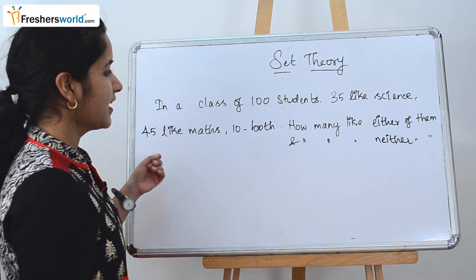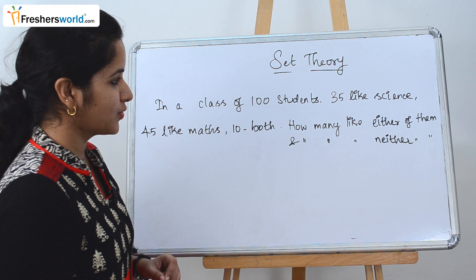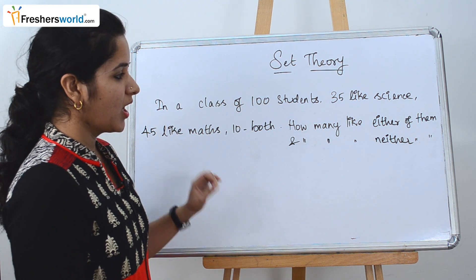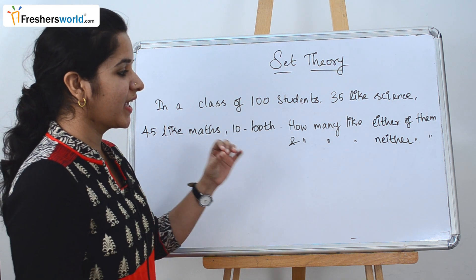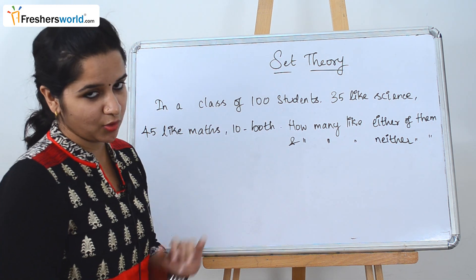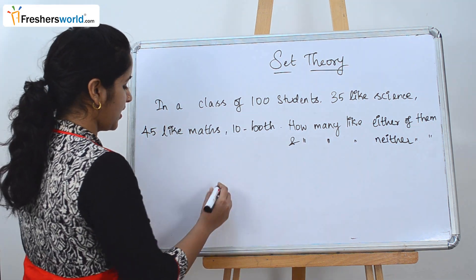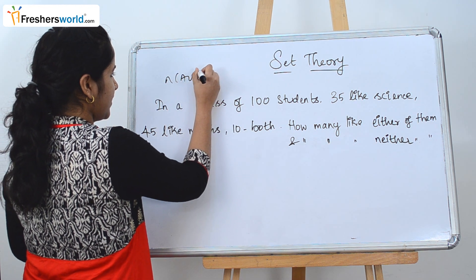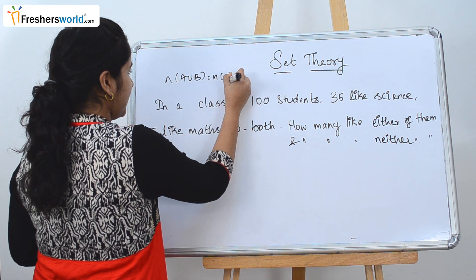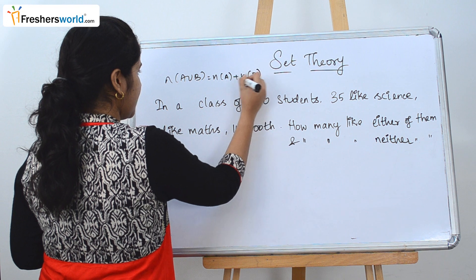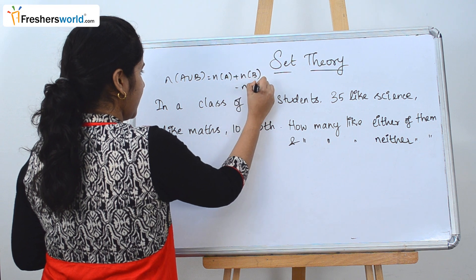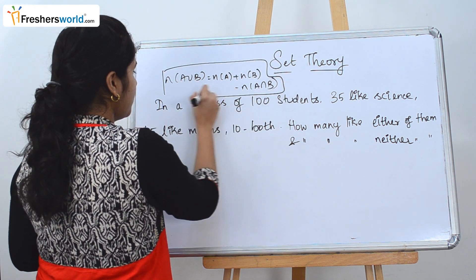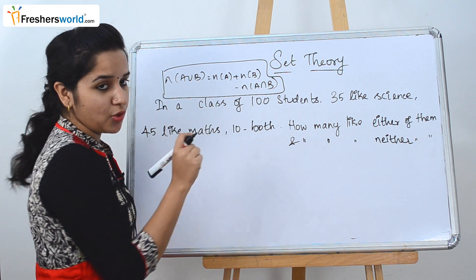The first question: in a class of 100 students, 35 like science, 45 like maths, and 10 like both. How many like either of them and how many like neither of them? The formula we are going to use is: N(A ∪ B) = N(A) + N(B) − N(A ∩ B).